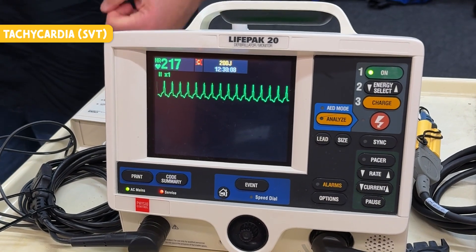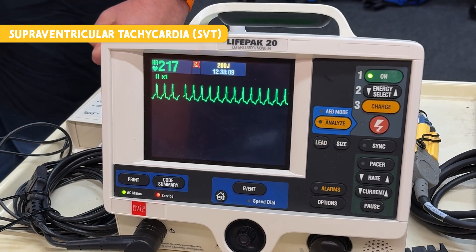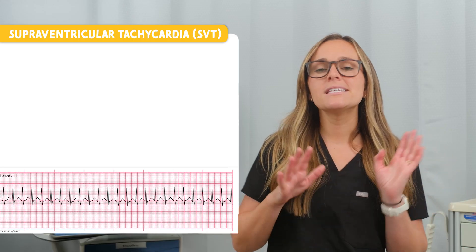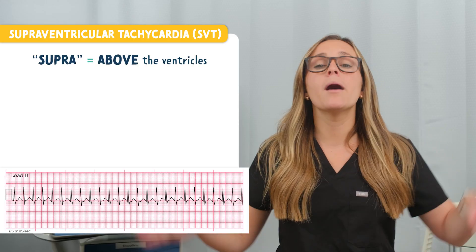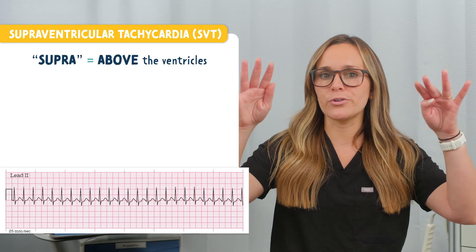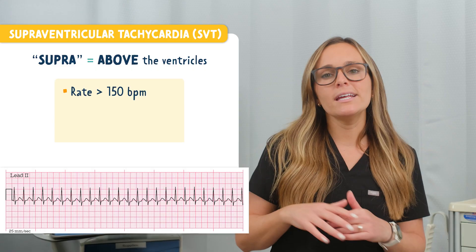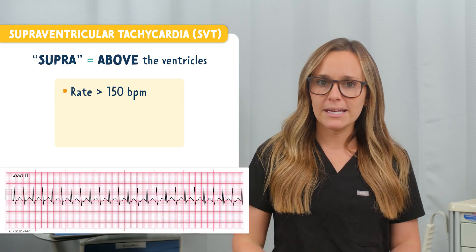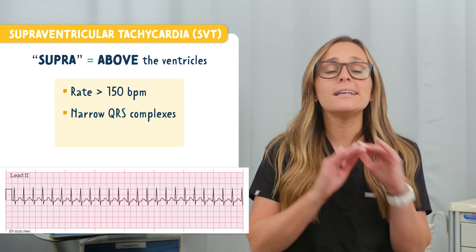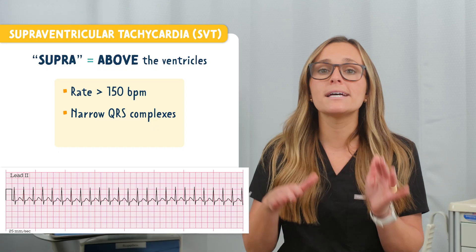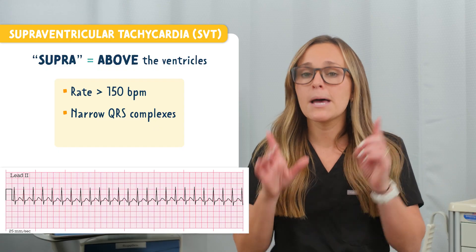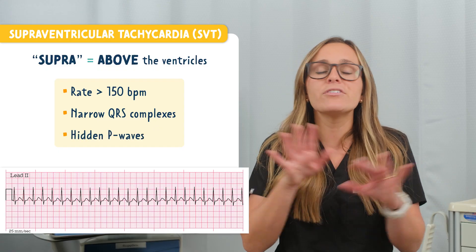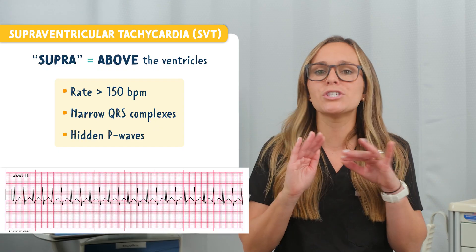This is supraventricular tachycardia or SVT. Supra means above, meaning it comes from above the ventricles. The rate is usually over 150 beats per minute. You'll see a regular rhythm with a narrow QRS complex, but the P waves are often hidden because everything is moving so fast.